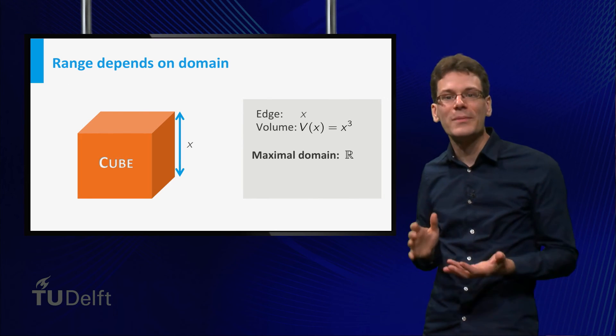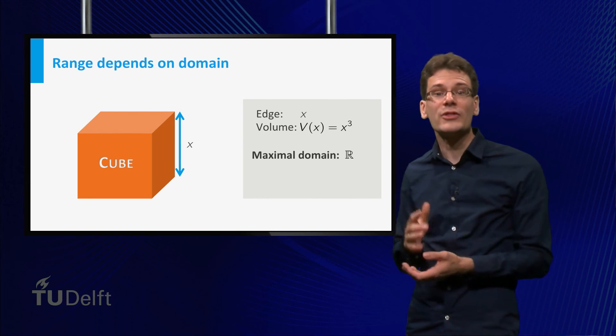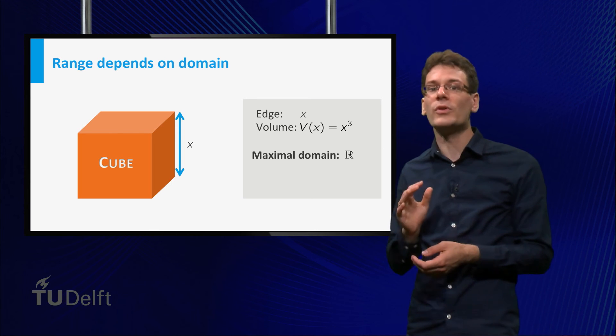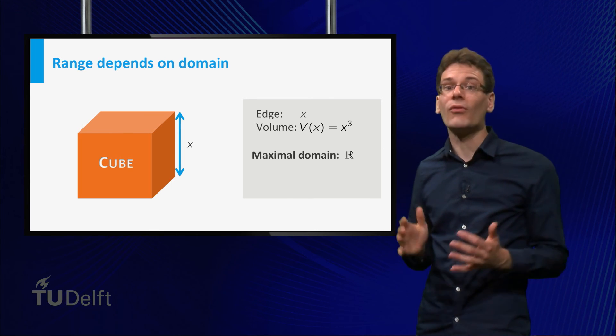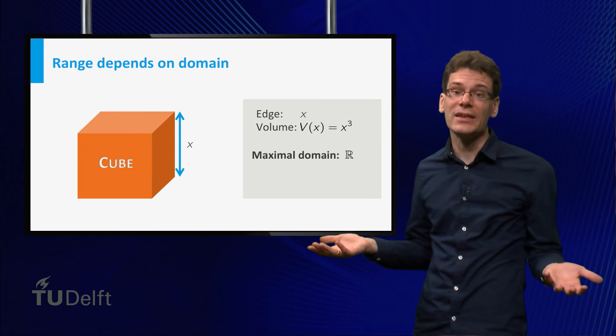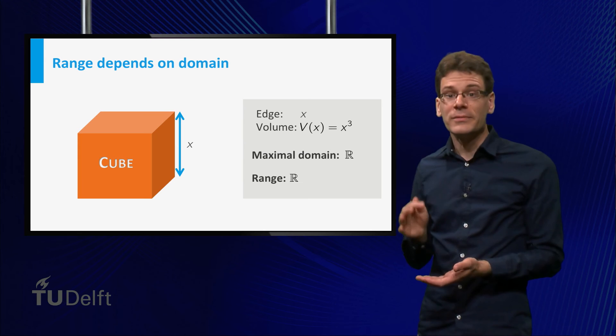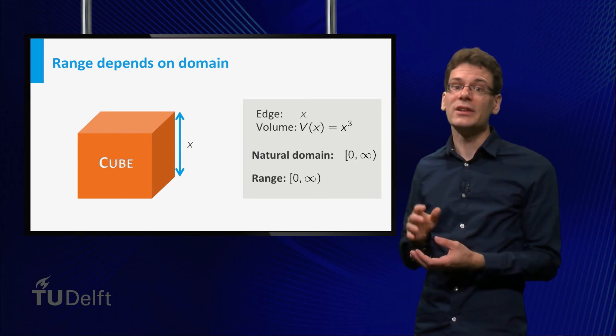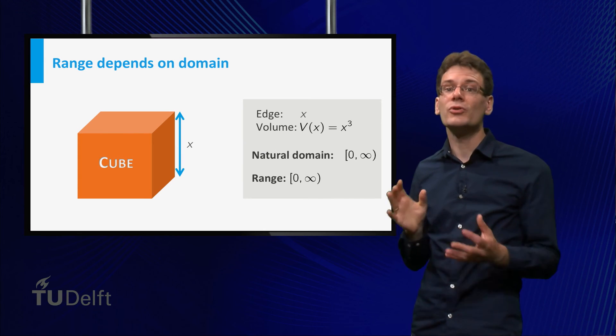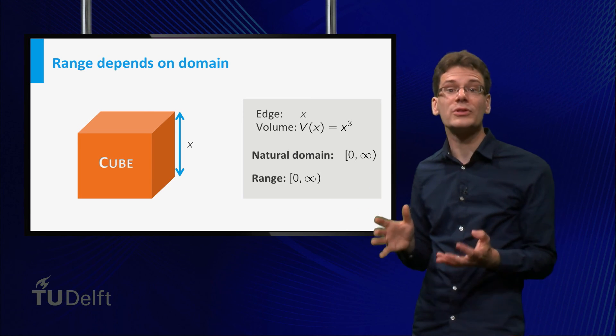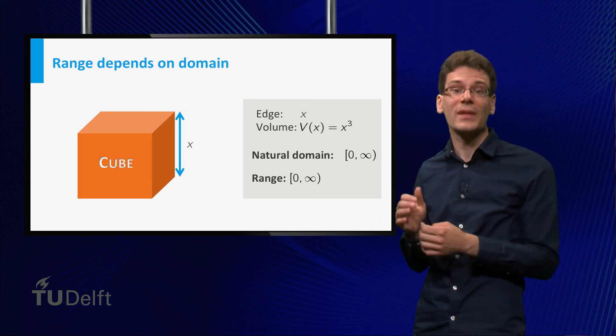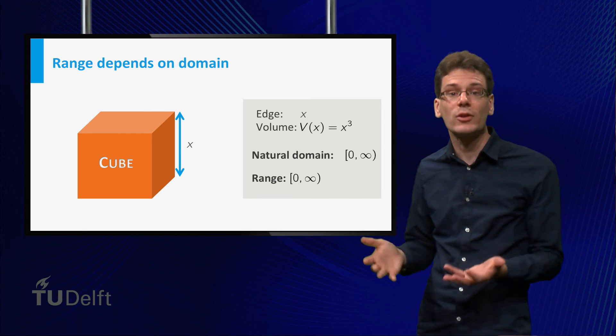The range of a function may depend on the chosen domain. And to illustrate this, let me return to the cube once more. The maximal domain is the set of all real numbers. In that case, the range is the set of all real numbers as well. But for the natural domain, we left out the negative values of x. Choosing this domain, the range is also the set of all numbers larger than or equal to 0. And this makes sense, since volumes cannot be negative.